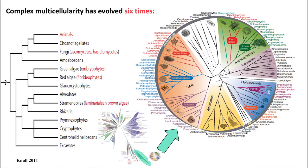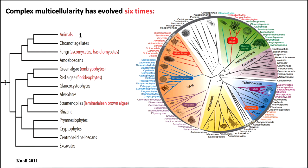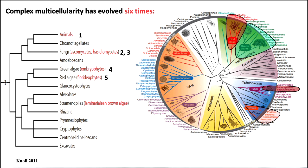Let's look at where these independent origins of complex multicellularity happen on this pie chart. There's animals — number one — right here in the lower right. Numbers two and three are the ascomycetes and basidiomycetes, right there on the chart, very closely related. Notice there are a lot of other fungi that don't have complex multicellularity. Number four — embryophytes — right there. Then red algae — floridiophytes — number five. And laminarian brown algae — number six — right there, a little bit different from the others.